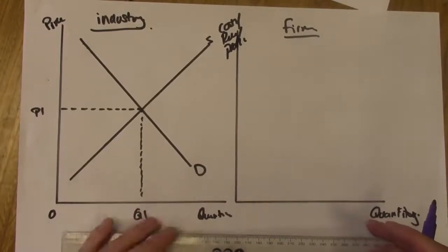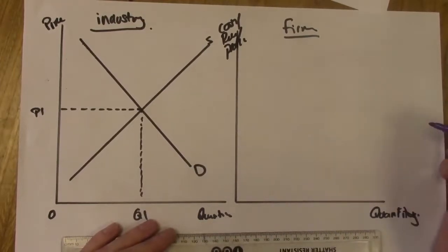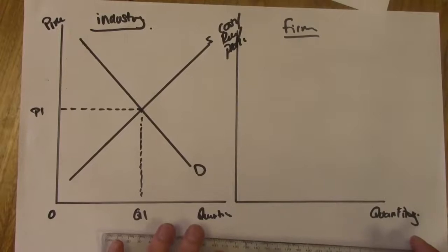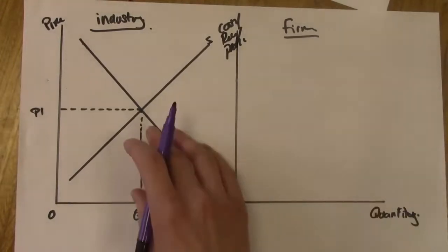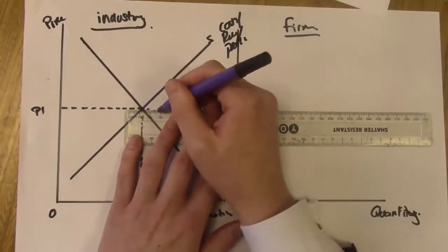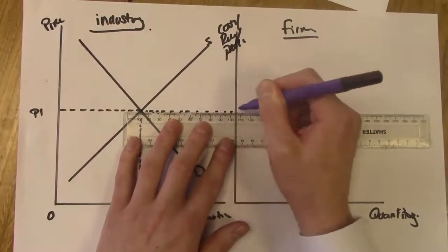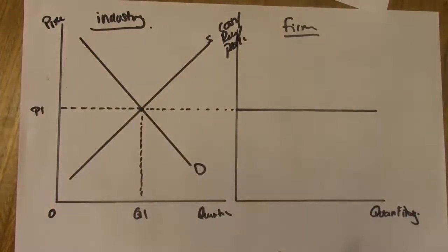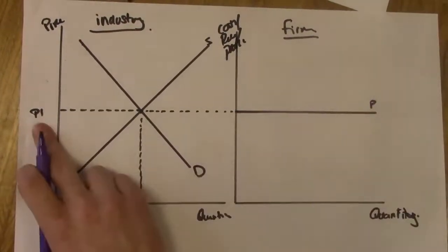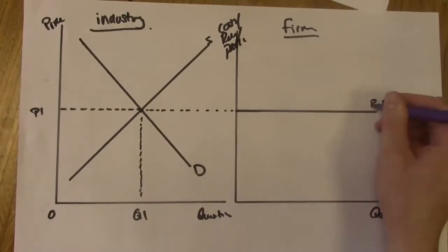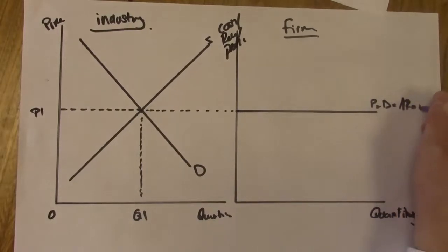For the firm diagram on the right — this is the trickier diagram that students often get confused with. Because the price is determined by market forces, we must show a perfectly elastic demand curve. Get your ruler and from the equilibrium point draw a straight line across to the y-axis of the firm diagram. Label this curve: price equals demand, which is set by the market forces at P1.